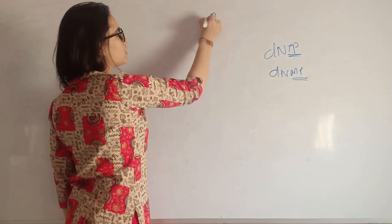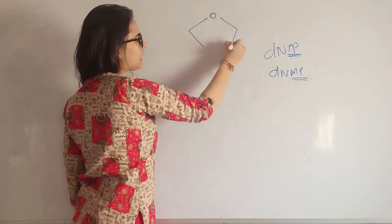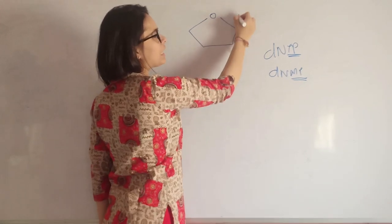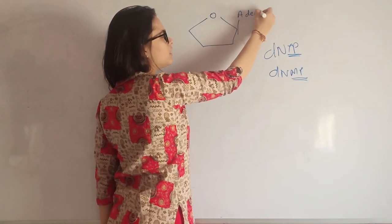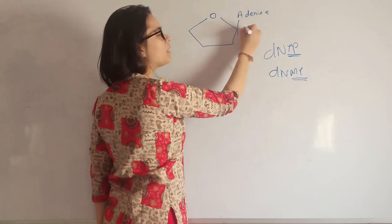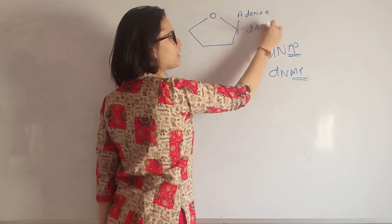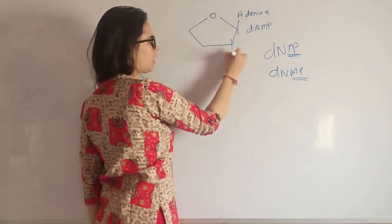Let's start and see how the ligation process is taking place. This is a nucleotide, and the nucleotide has adenine with it, so it would be named as dAMP.